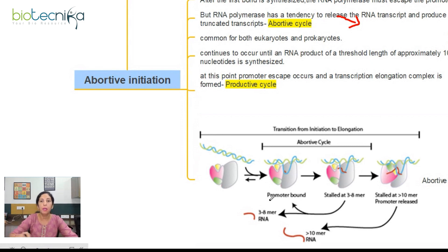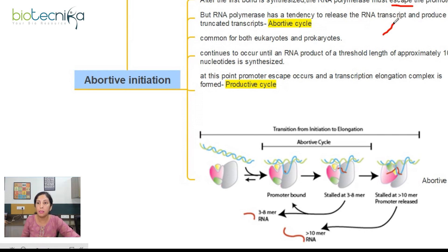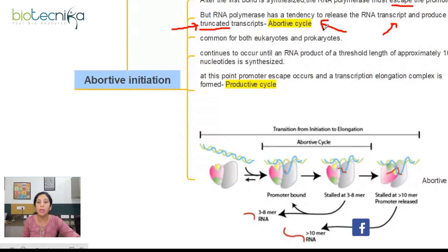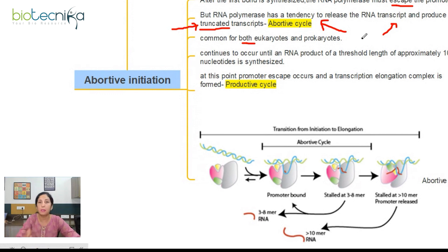At this point, RNA polymerase is in the abortive cycle — those truncated RNA transcripts are synthesized and released. You must know that this phenomenon is common for both eukaryotes and prokaryotes. The next question is: how long will it continue? How long will these truncated transcripts keep forming? The abortive cycle will continue to occur until an RNA product of threshold length of approximately 10 to 12 nucleotides is synthesized.